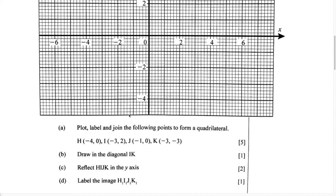For our first point, we have point H. They give us the coordinates negative 4, 0. So we know negative 4 is going to be on the X axis, and 0 is going to be on the Y axis. If we find negative 4 on the X axis, we can see it's going to be right here. And we know this is also going to be 0 on the Y axis, so we're just going to mark that point and label it H.